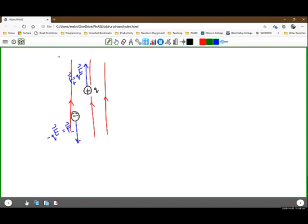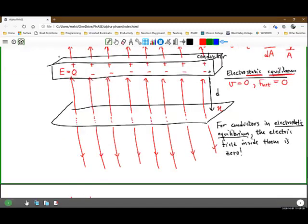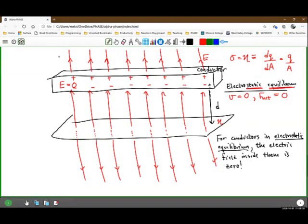So for our picture here, when we are saying the charges are in equilibrium, that guarantees there cannot be an electric field. Because if there were an electric field, the charges would be moving.